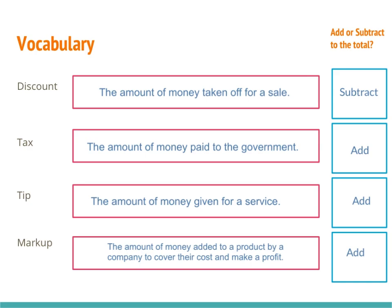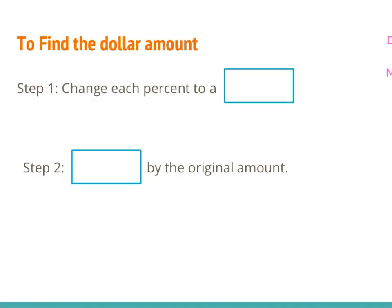There are two steps to find the dollar amount when finding tip, tax, discount, and markup. Step one: change the percent to a decimal — we can't multiply percents in our calculator, so they have to be decimals. Step two: multiply by the original amount. Once we've turned it to a decimal, we multiply that by our original amount, and that tells us how much money is in the tip, tax, discount, or markup.